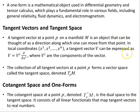A one-form is a mathematical object used in differential geometry and tensor calculus. It plays a fundamental role in various fields including general relativity, fluid dynamics, and electromagnetism. To better understand it, we're going to look at tangent vectors, tangent space, and then cotangent space and one-forms.